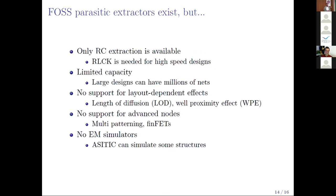Parasitic extractors are present for open source, but only RC extraction — other extractors are needed for high-speed design. They are of limited capacity, so large designs with millions of nets are beyond the capacity of currently available extractors. There is also no support for layout-dependent effects, no support for advanced nodes, and no EM simulators — with FastHenry as a notable example of what can simulate some structures.